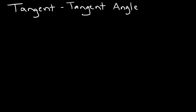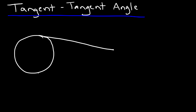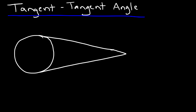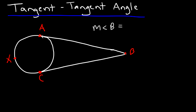The tangent-tangent angle is formed by two tangent segments from a common exterior point. With points A, B, C, and X, the measure of angle B = one-half the difference of the major arc AXC and the minor arc AC.